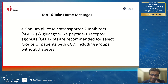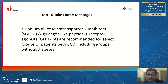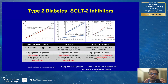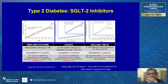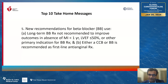SGLT2 inhibitors and GLP-1 receptor agonists are extremely important medications in patients with CCD — and now even in patients with CCD who don't have diabetes but have heart failure, in both reduced, preserved, and mid-range ejection fraction. Some earlier trials of SGLT2 inhibitors and GLP-1 receptor agonists were performed in patients with established ASCVD, including CCD. These medications are now moving toward trials in primary and high-risk primary prevention settings as well.